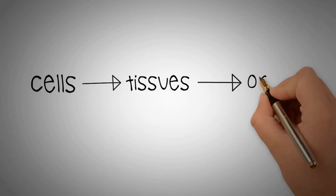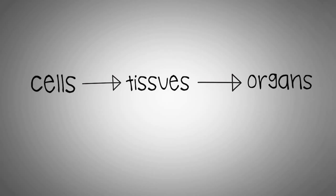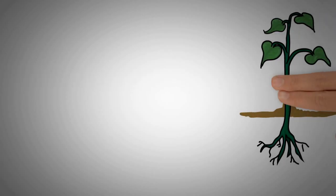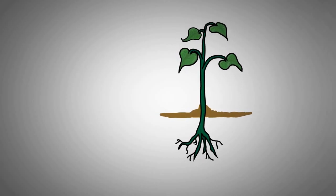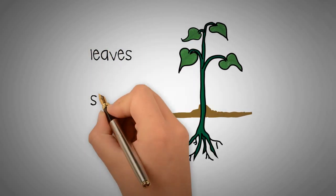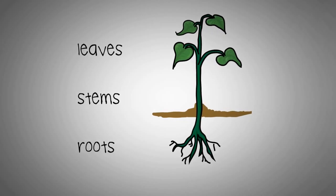The three plant tissues work together to form the three vegetative organs of the plant. These are the leaves, the stems, and the roots.